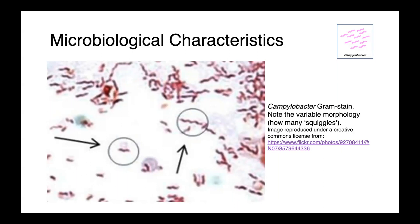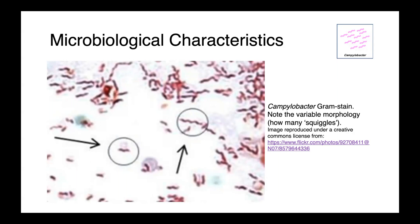Enteric Campylobacter species tend to have a morphology which varies with the age of the culture. A very fresh overnight culture may be very squiggly, and as those plates get older and are incubated longer, the organisms can straighten out and become almost like a straight rod. Here's a scanning electron micrograph of Campylobacter jejuni. You can see just how squiggly it is and again the variability.